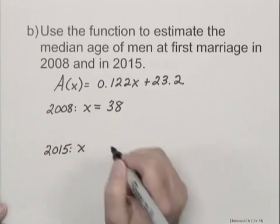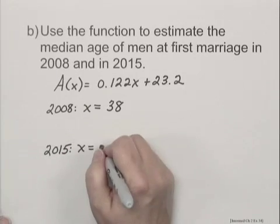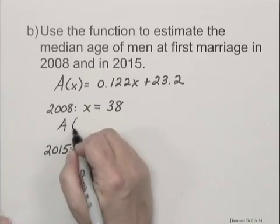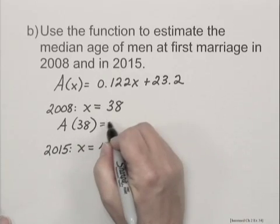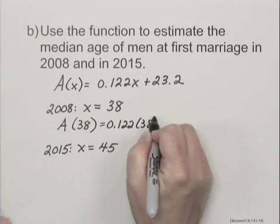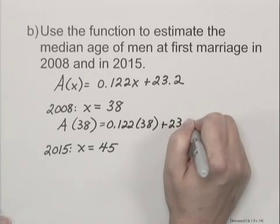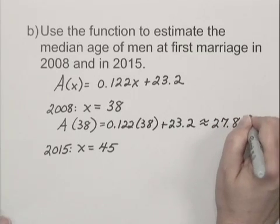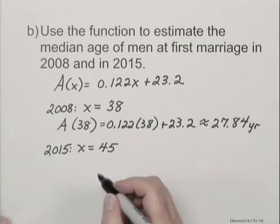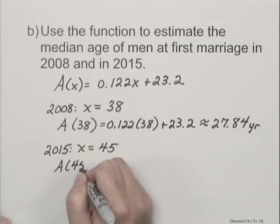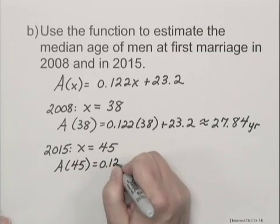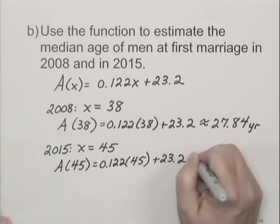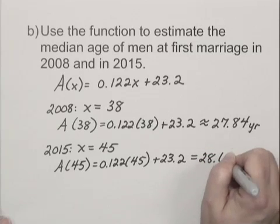So what we need to find then is A(38), which gives us 0.122 times 38 plus 23.2, which calculating and rounding would be about 27.84 years. And A(45) would be 0.122 times 45 plus 23.2, and this equals 28.69 years.